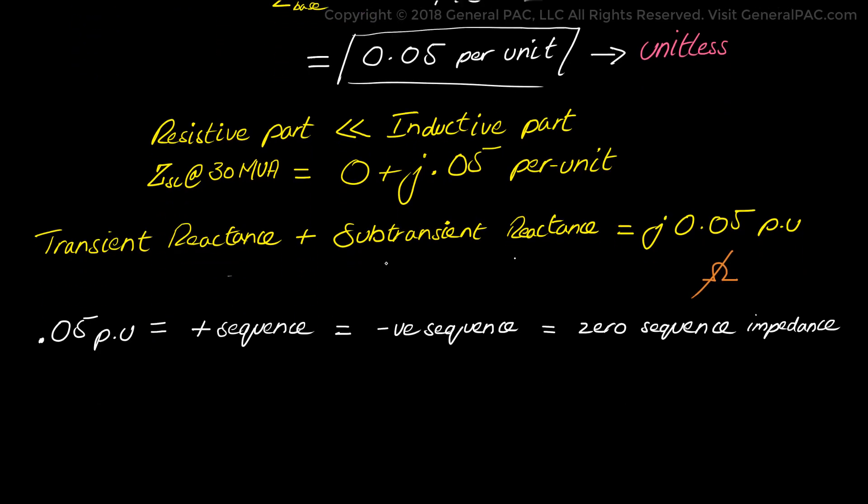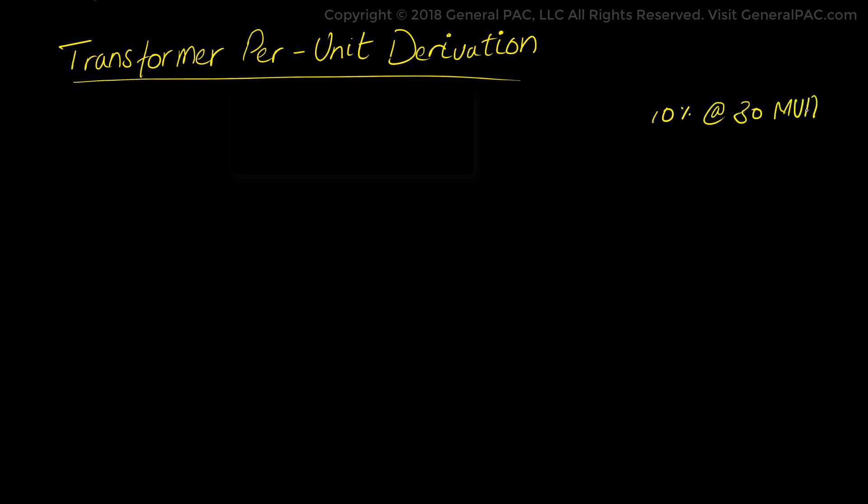Now let's move on to the transformer per unit impedance derivation. The impedance was given at 10% at 30 MVA for both the positive sequence and the zero sequence impedance. Since we selected 30 MVA as our base earlier it just comes out to be that the positive sequence impedance of the transformer is equal to 0 plus j times 0.10 per unit.